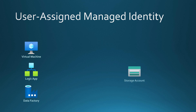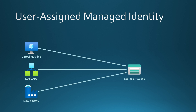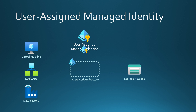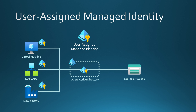We also have a storage account, and all three of these resources would like to access that storage account. If we would like to give access to this storage account using just one identity, we could consider using a user assigned managed identity. We can create a resource called user assigned managed identity that can be found in the Azure marketplace. When we create that resource, it will create a corresponding identity in Azure Active Directory. Then we can grant this identity to all three of our resources, and give access using that identity to the storage account, so they will all be able to access the same storage account using the same identity.